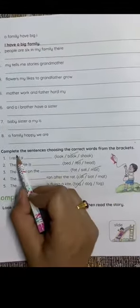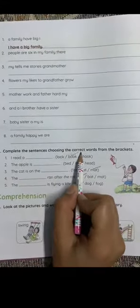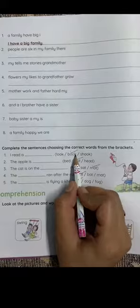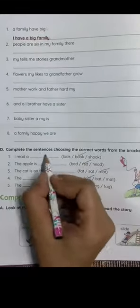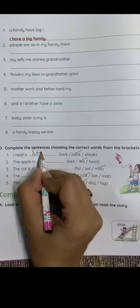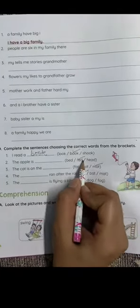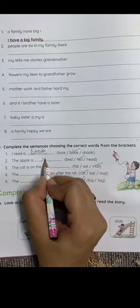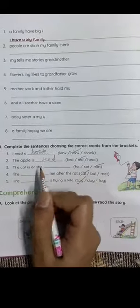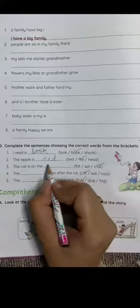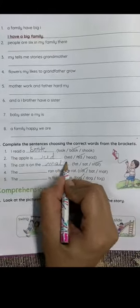Now complete the sentences choosing the correct words from the brackets. I read a what? I read: look, book, or shook. The book. Book is the correct word. The apple is dash: bad, red, or head. Red. The apple is red, full stop. The cat is on the: fat, sat, or mat. Cat is on the mat.